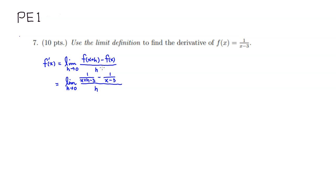The next step: if you plug in h equals 0, you see the denominator approaches 0. And the numerator becomes 1 over x minus 3 minus the same thing, so it also approaches 0. You get 0 over 0, which you cannot write as an answer because it's never correct.